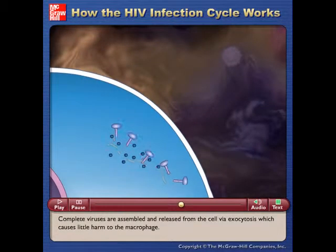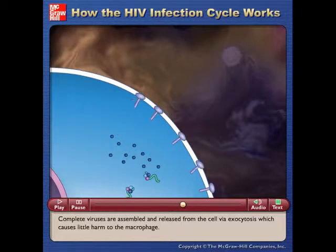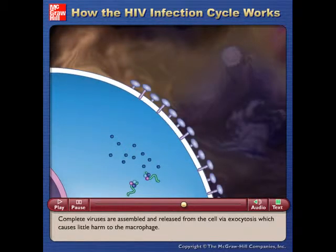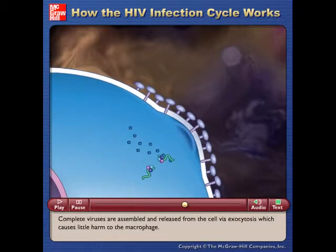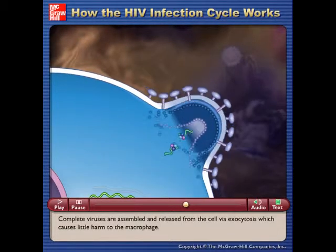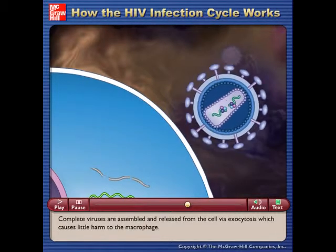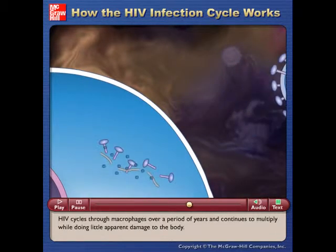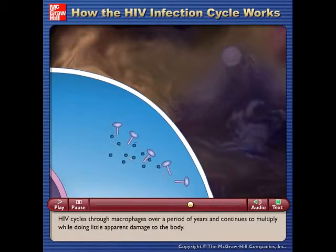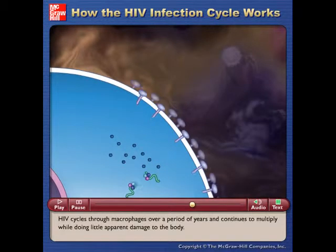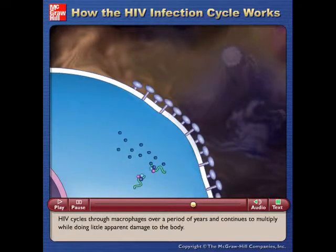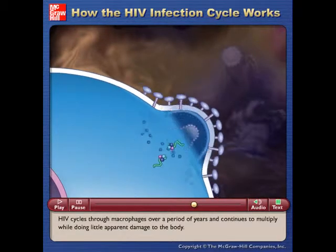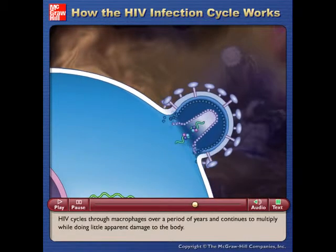Complete viruses are assembled and released from the cell via exocytosis, which causes little harm to the macrophage. HIV cycles through macrophages over a period of years and continues to multiply while doing little apparent damage to the body.